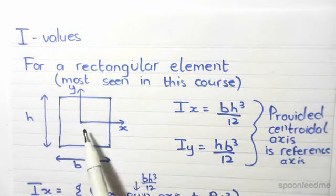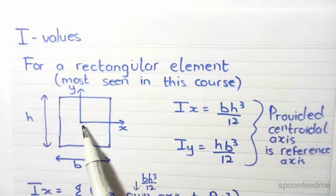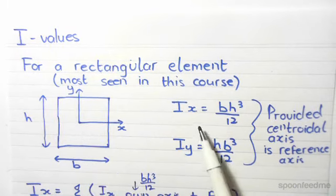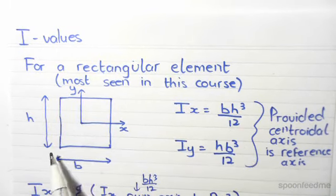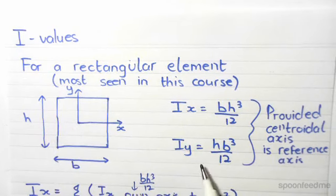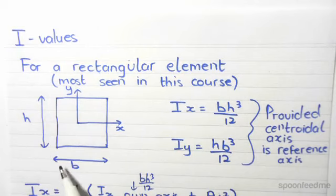Now assuming this arbitrary reference axis also coincides with the centroidal axis, if this is the case then the Ix value is bh³ divided by 12. And Iy equals to h times b³, so times the base cubed, and we divide this by 12.